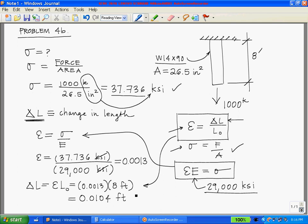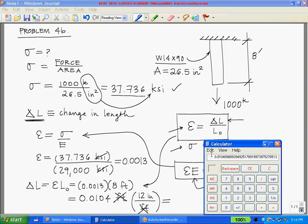Because strain is unitless, and the only thing we have left to do is convert this into inches. So we're going to multiply it by 12 inches per foot. Your feet will cancel out.